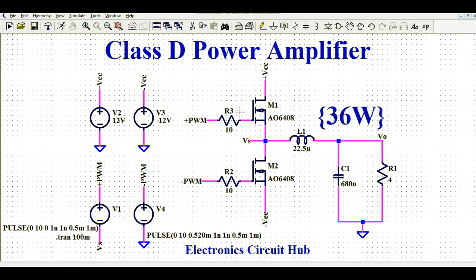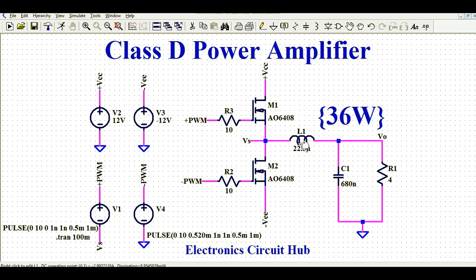I have used gate driving resistors R3 and R2, each 10 ohms. You can see this is the plus PWM and this is the minus PWM — I am giving complementary signals to drive M1 and M2. I will show in the simulation how the PWM signals look and how I have implemented the dead time between them.